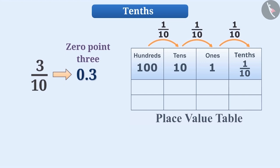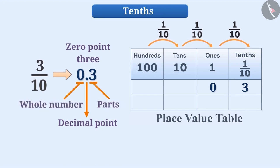So, we can say that in 0.3, there are zero units and three tenths. Thus, we can say that the decimal point separates the units from the tenths, which means it separates a whole from its parts.